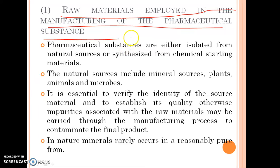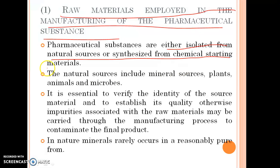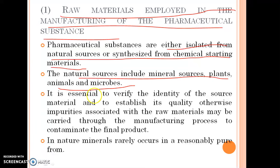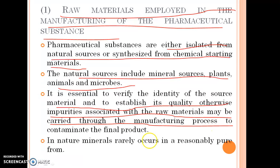Regarding raw materials: pharmaceutical substances are either isolated from natural sources or synthesized from chemical starting materials. The natural sources include mineral sources, plants, animals and microbes. It is essential to verify the identity of the source material to establish its quality. Otherwise, impurities associated with the raw material may be carried through the manufacturing process to contaminate the final product.